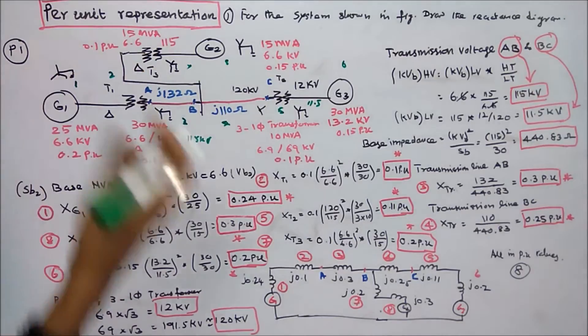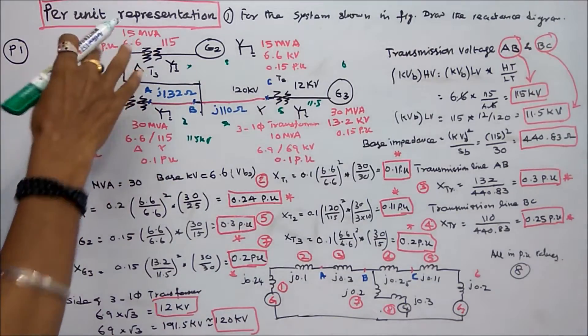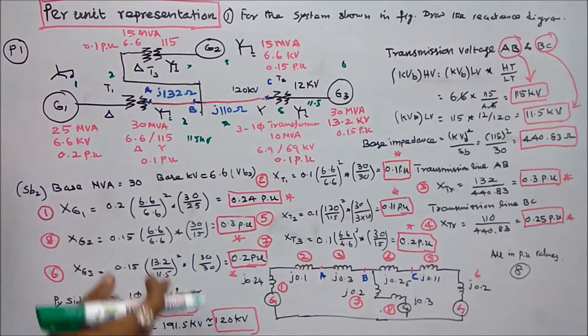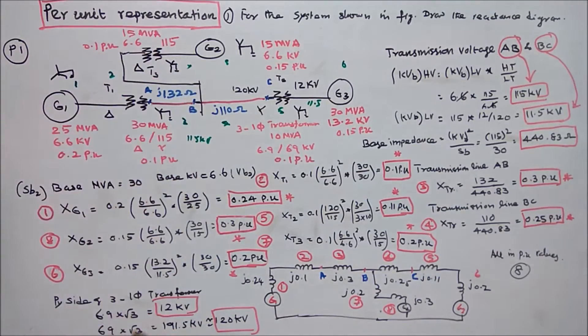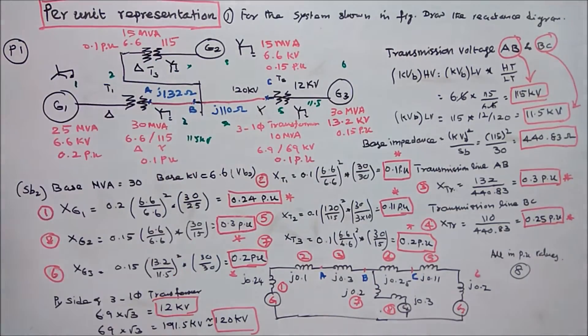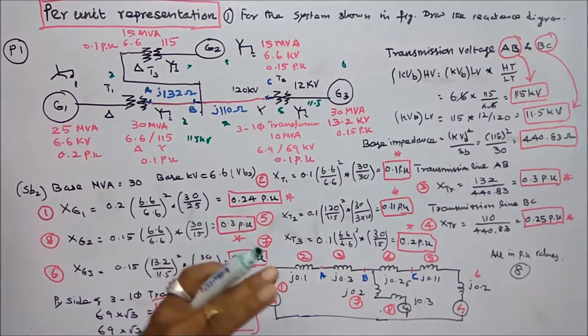Seventh is a transformer. Rating is 15 MVA, 6.6/115 kV. This side is delta connected and this side is star connected. Reactance is 0.13 per unit.